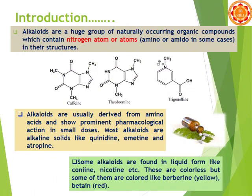Alkaloids are a huge group of naturally occurring organic compounds which contain nitrogen atom or atoms — amino or imino in some cases — in their structure. Structures like caffeine, theobromine, and trigonelline show that nitrogen is present. This is the characteristic nature of alkaloids: nitrogen is present in acyclic, cyclic, or heterocyclic rings.